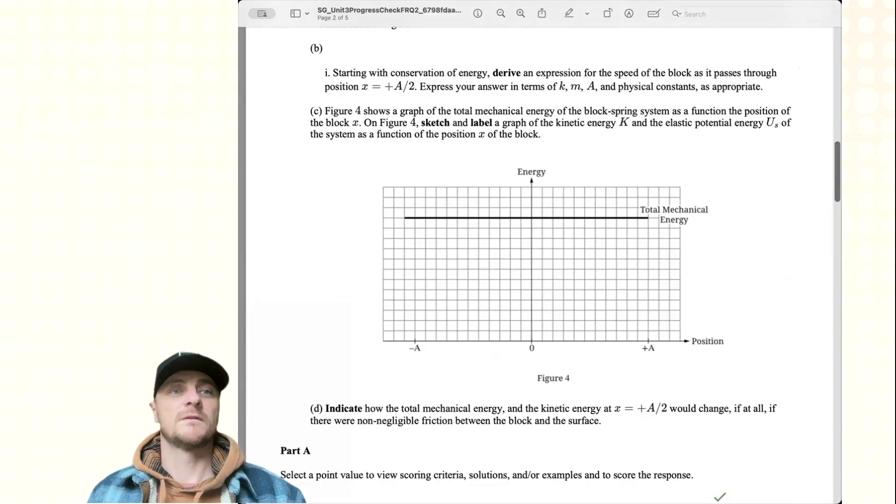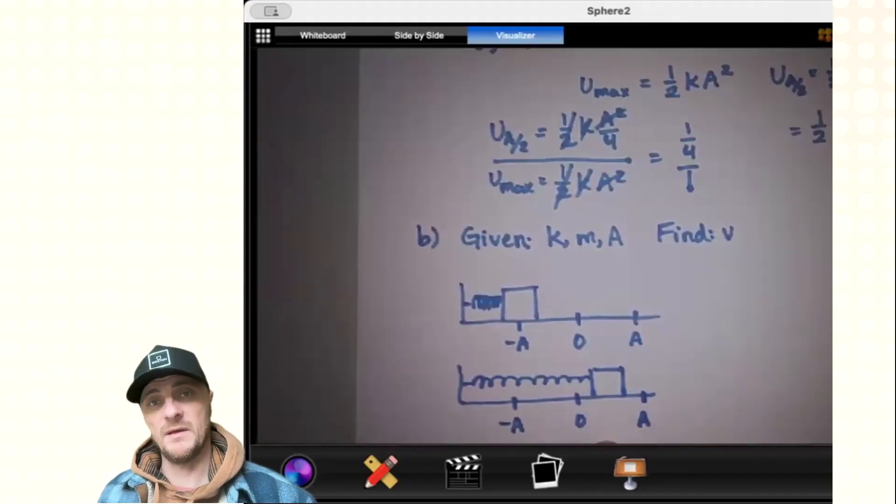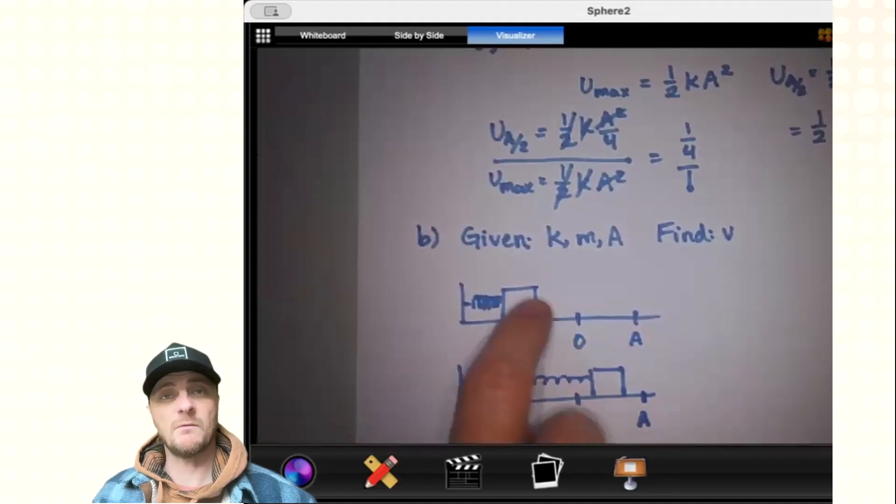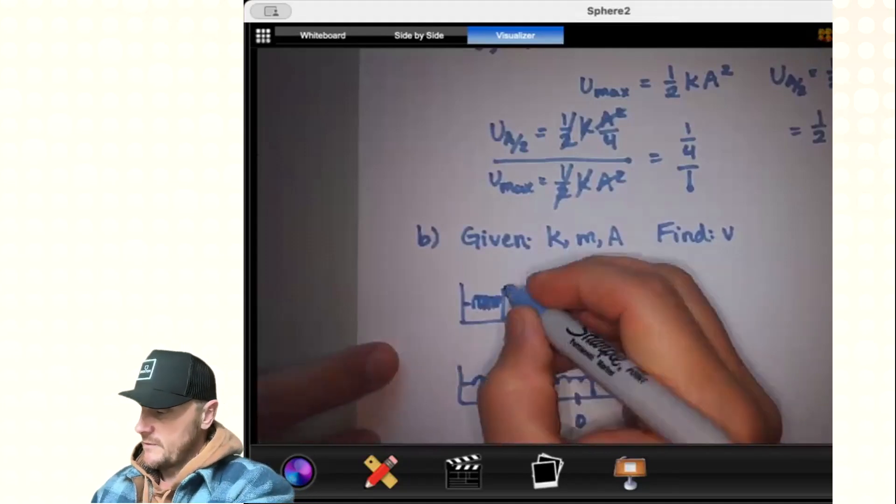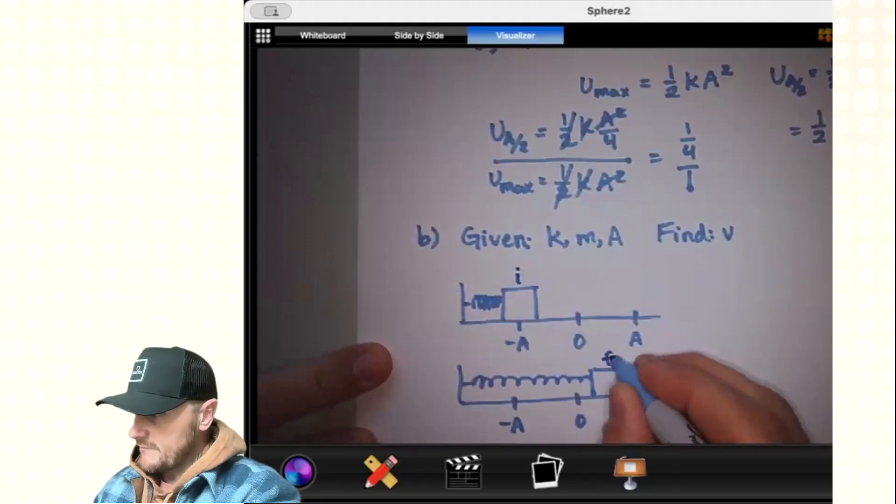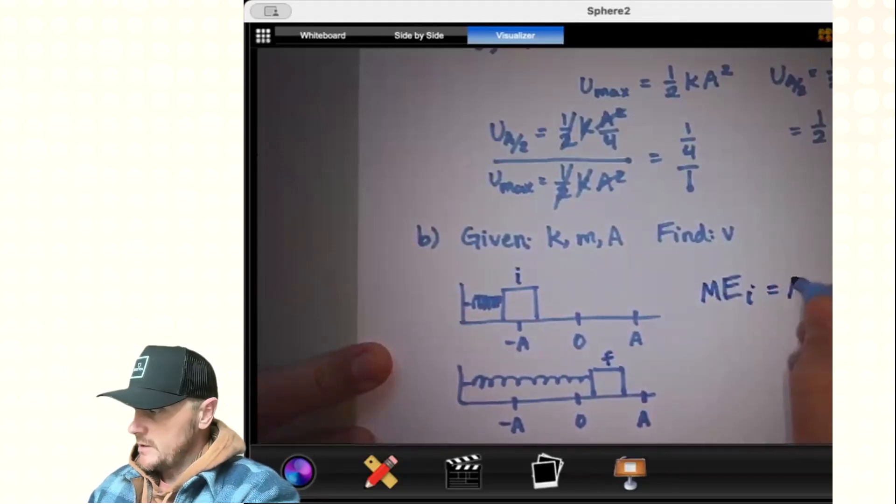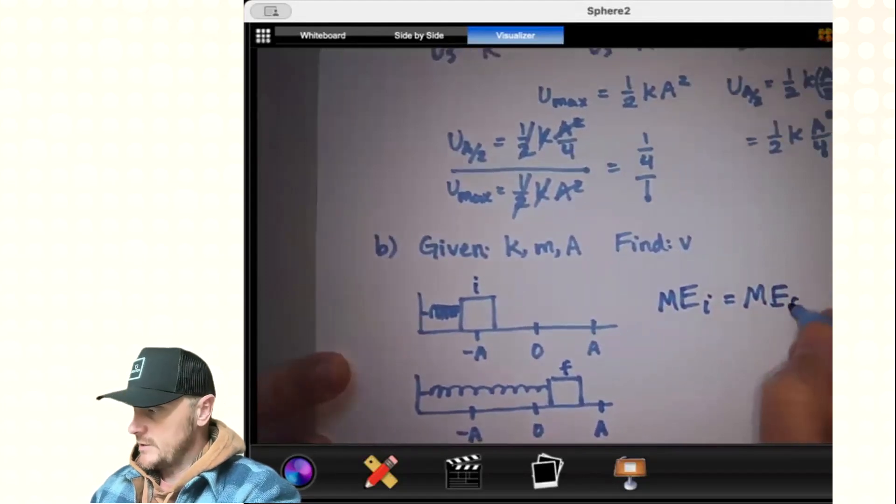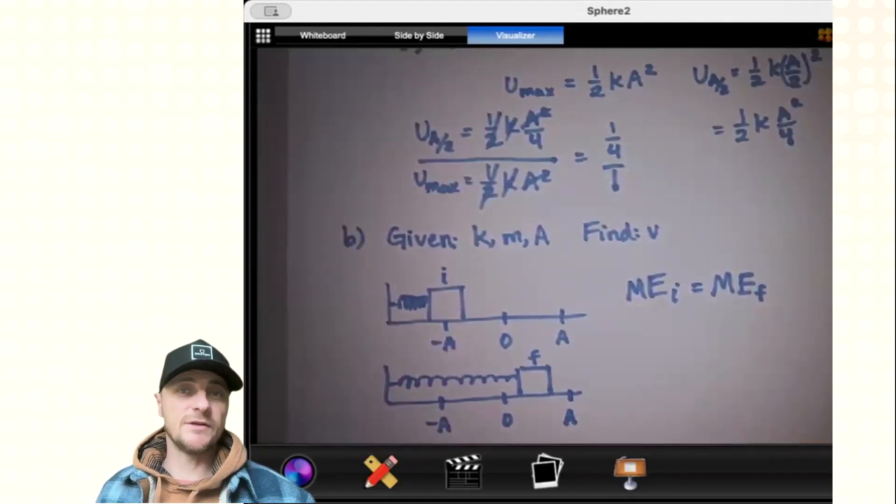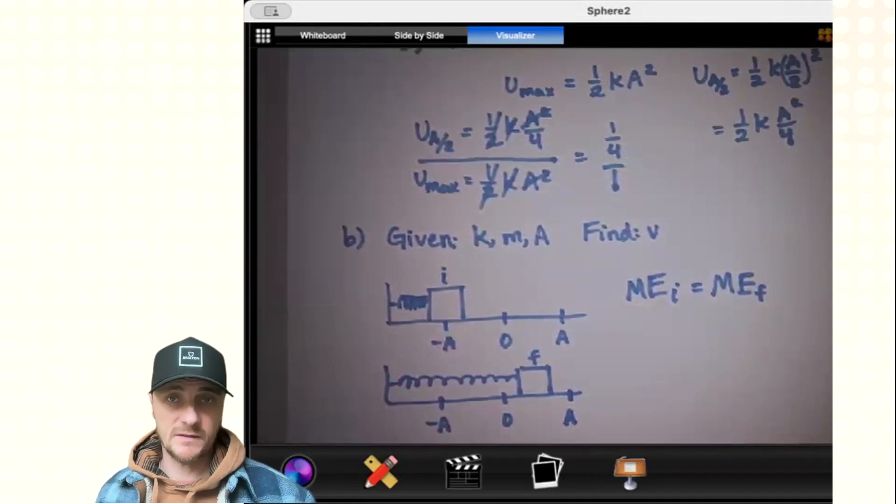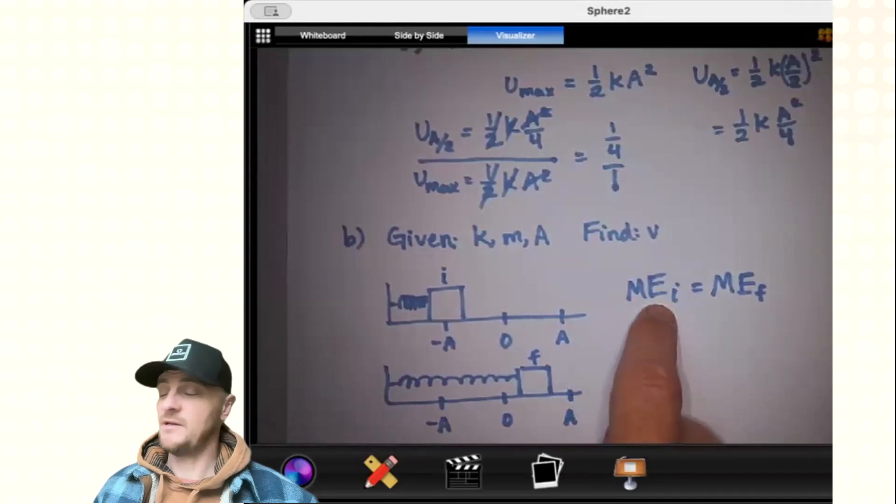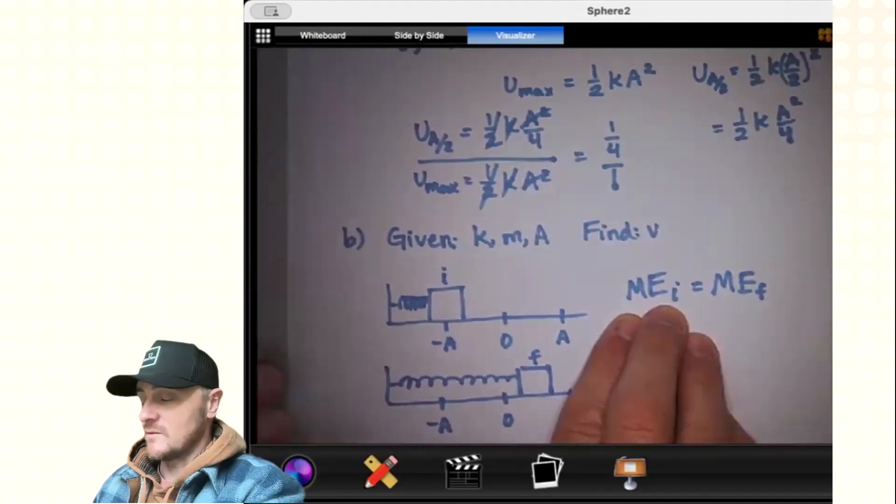Moving on to part b. Starting with the conservation of energy, derive an expression for the speed of the block as it passes through position x equals positive a divided by two. Express your answers in terms of k, m, a, and physical constants as appropriate. Here's our scenario for part b. I've drawn out our model in the two different locations I want to consider. They want us to use conservation of energy. I'll call that my initial position and this my final position. My initial mechanical energy will be equal to my final mechanical energy. If there's no non-conservative forces like friction or someone externally pushing or pulling the system, then we get to say my initial mechanical energy equals my final mechanical energy.